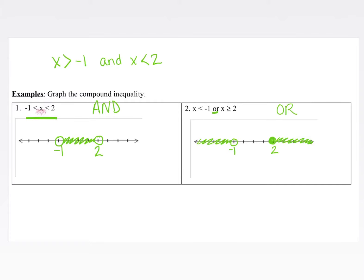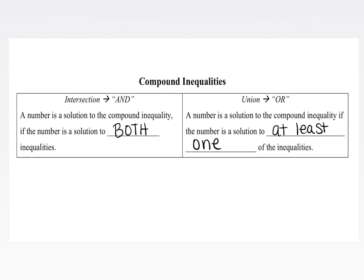This is an 'or' inequality. Oftentimes, 'and' inequalities shade in between the two numbers, and 'or' inequalities shade in opposite directions. However, this is not always the case, so I highly recommend paying attention to the problem and reading it carefully — thinking back to whether it needs to satisfy both inequalities or at least one.